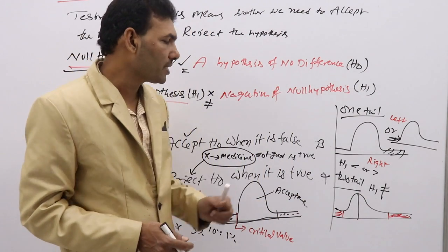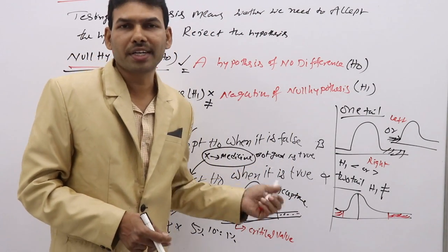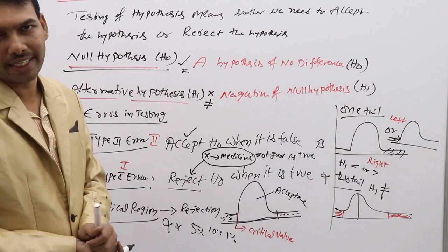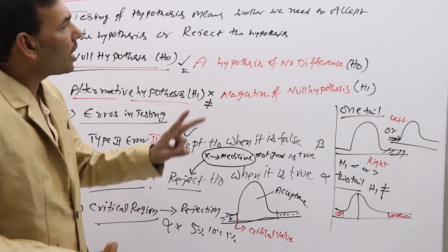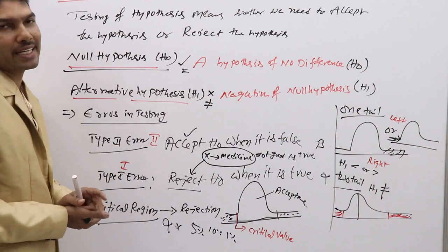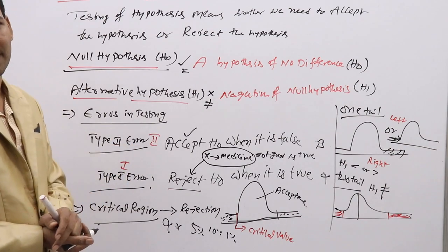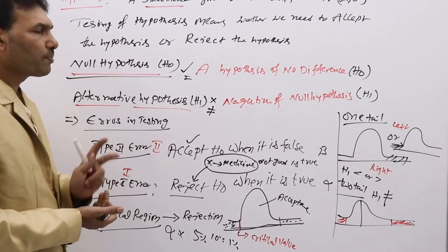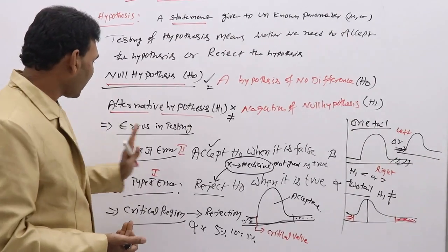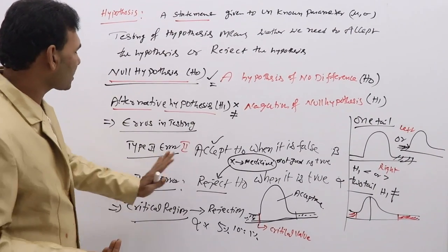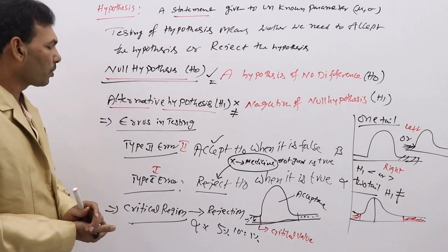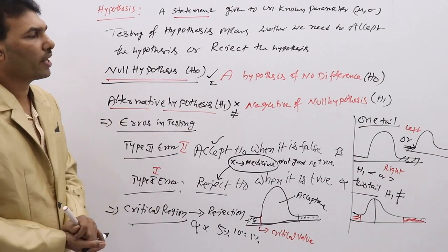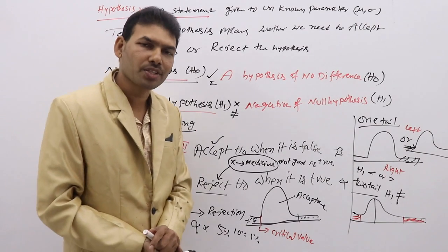In a two-tail test, H1 is not equal to type, meaning we need to test on both the less than side and greater than side. These are the fundamental concepts on testing of hypothesis: what is hypothesis, types of hypothesis, type 1 error and type 2 error, and types of tests — one-tail test and two-tail test.